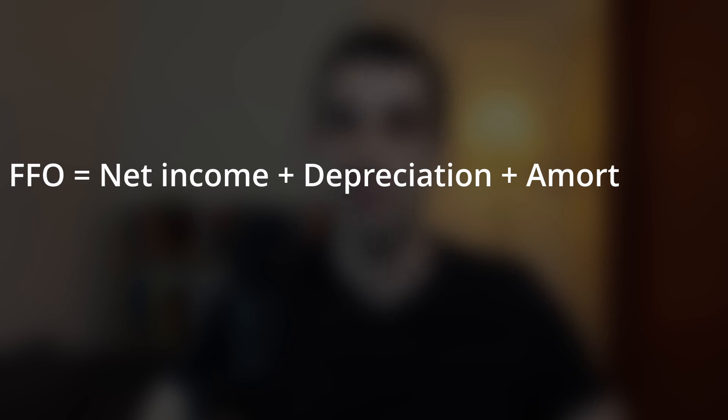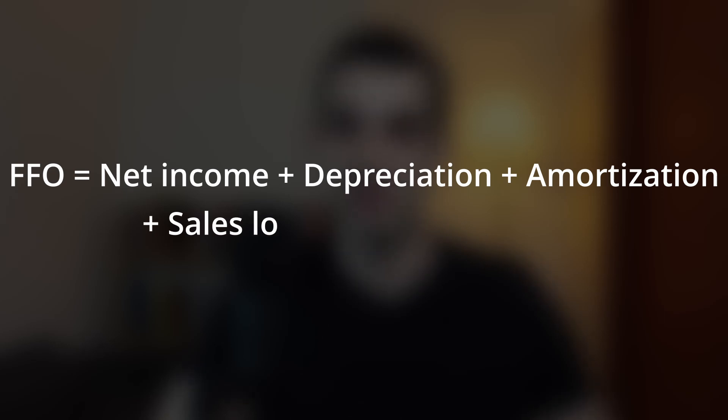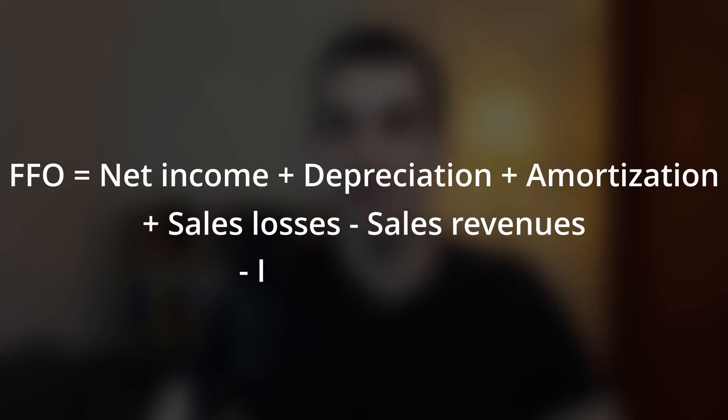Let's start by looking at how FFO, funds from operations, is calculated, and then we'll go into the reasoning for why it's better to use than net income. FFO is calculated by taking net income and adding back depreciation and amortization, neglecting any changes based on property sales — that means adding back losses on property sales and subtracting any gains from sales of property — and finally subtracting any interest income. So basically FFO is derived directly from the net income figure with some adjustments.